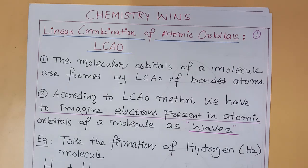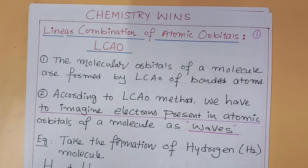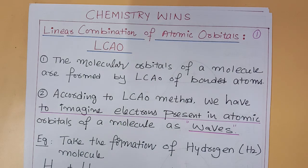Hello students, welcome to Chemistry Wins. The topic is linear combination of atomic orbitals, simply called LCAO. L means linear, C means combination, A means atomic, O means orbital. That is LCAO.